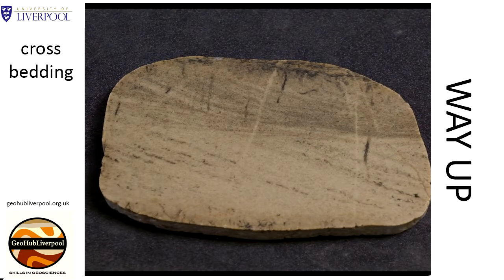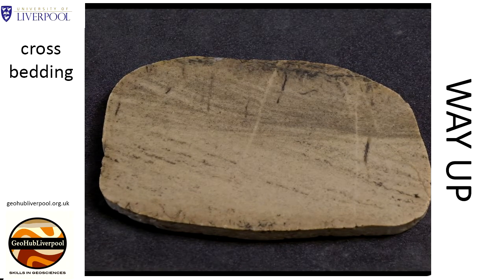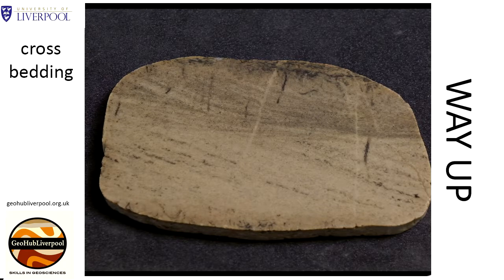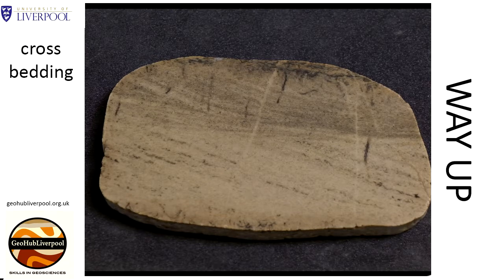Geologists can use a variety of primary sedimentary structures to work out the direction of younging, or the way up direction in rocks. This rock shows sedimentary structures called cross bedding. Cross bedding forms when sand is moved by wind or water currents and deposited in dunes.